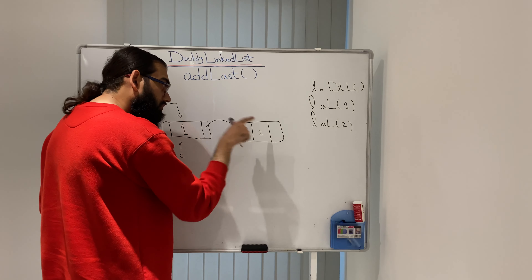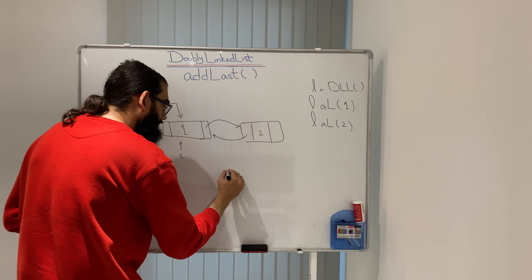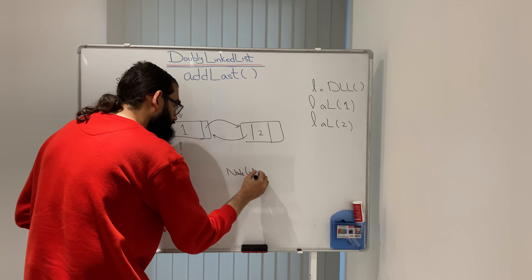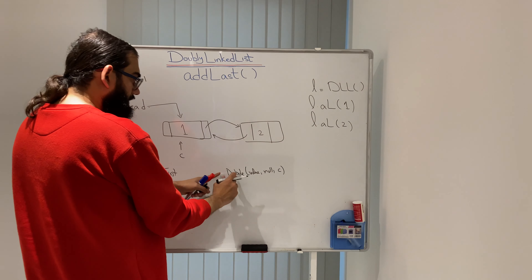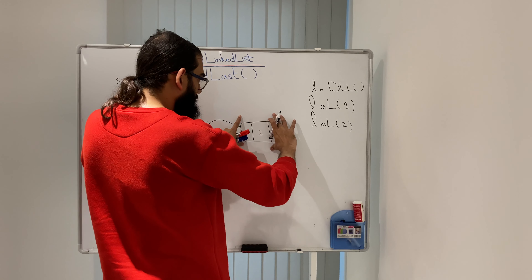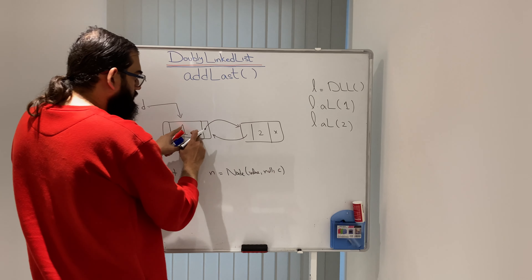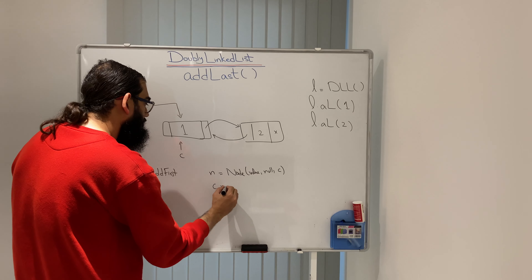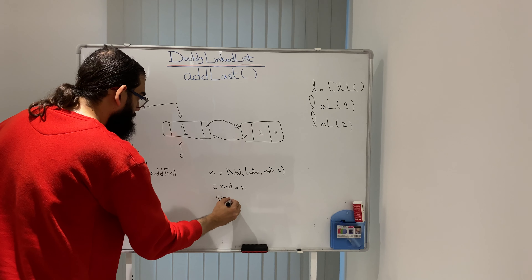In the code, the node constructor takes value, nextNode (null), and previousNode (current). So: new Node(value, null, current). This sets the new node's previousNode to c. Then I do c.nextNode = n to complete the forward link. After that, size++ — otherwise there will be a bug. The bidirectional connection is now complete.